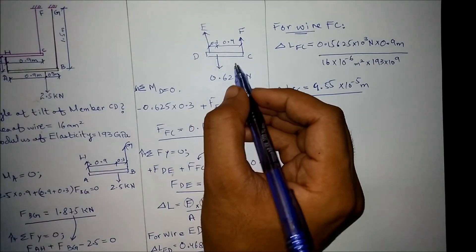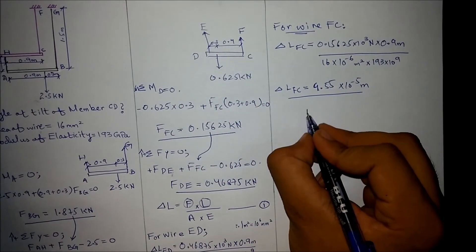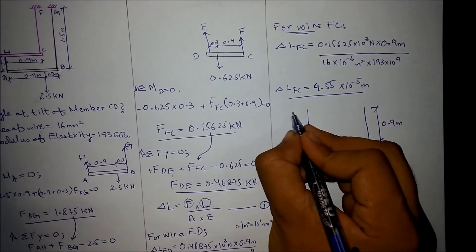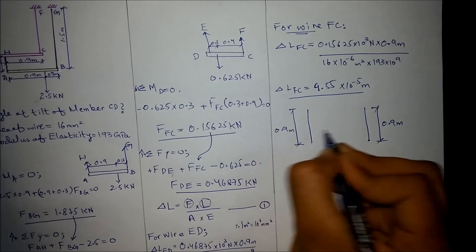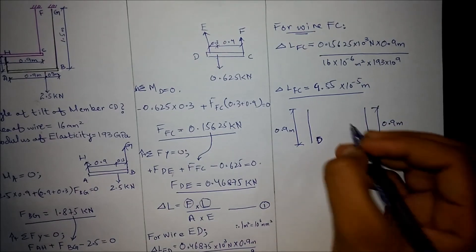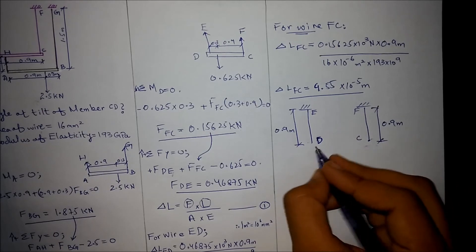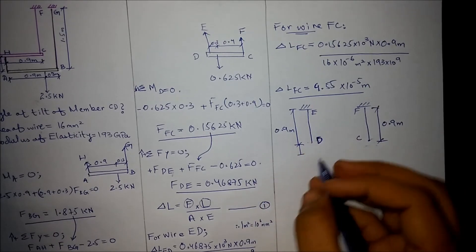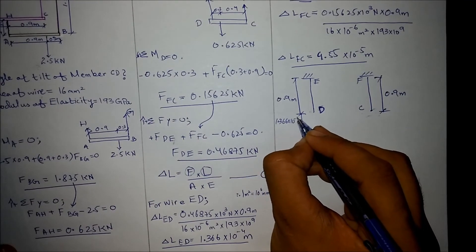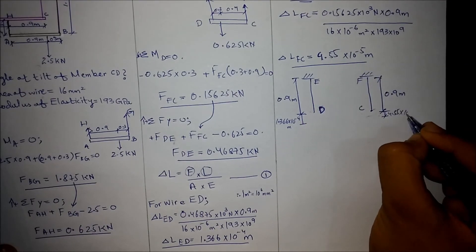Now geometrically we know that the wire FC is undergoing less change in length while FDE is undergoing more change. So the member after the application of load, initially both wires were of 0.9 meters, while due to change in length, in DE the change in length was 1.366 × 10⁻⁴ meters and change in length in FC is 4.55 × 10⁻⁵ meters.